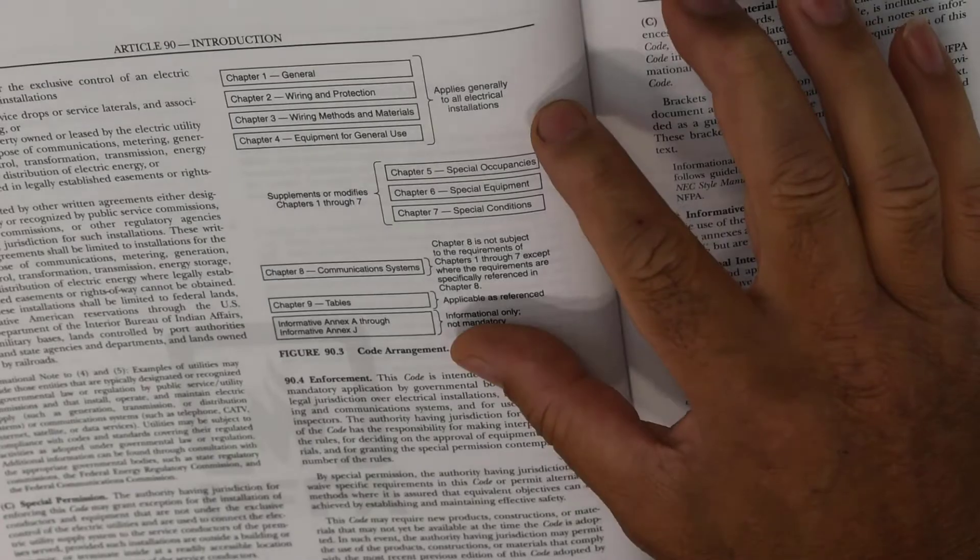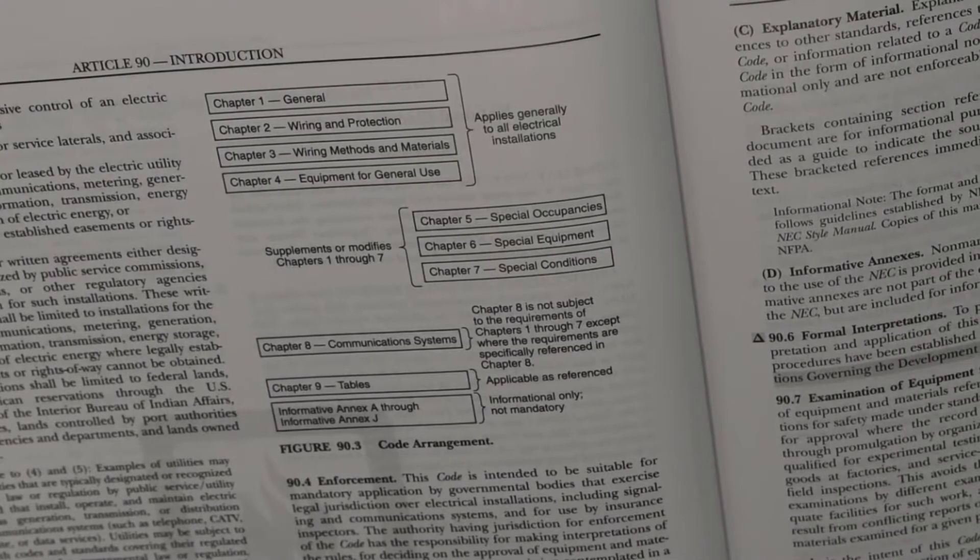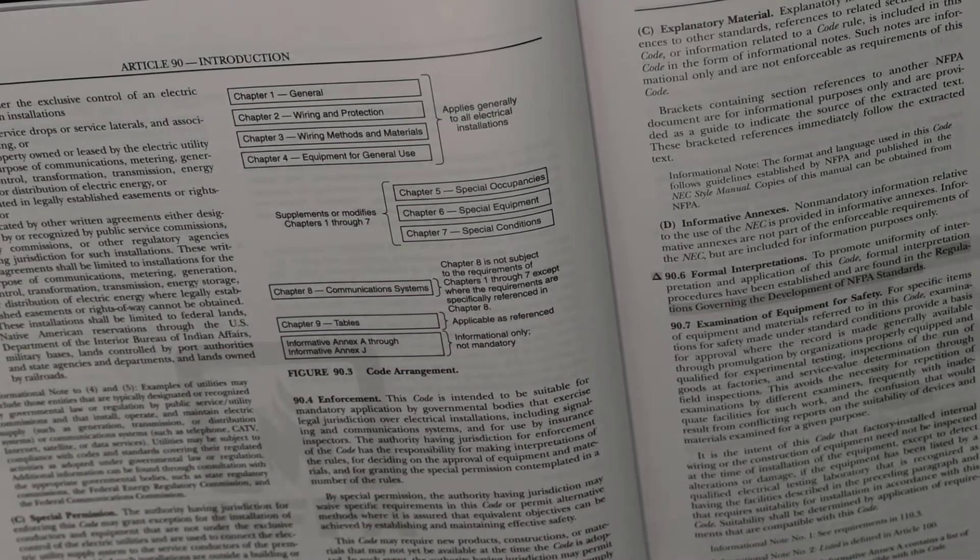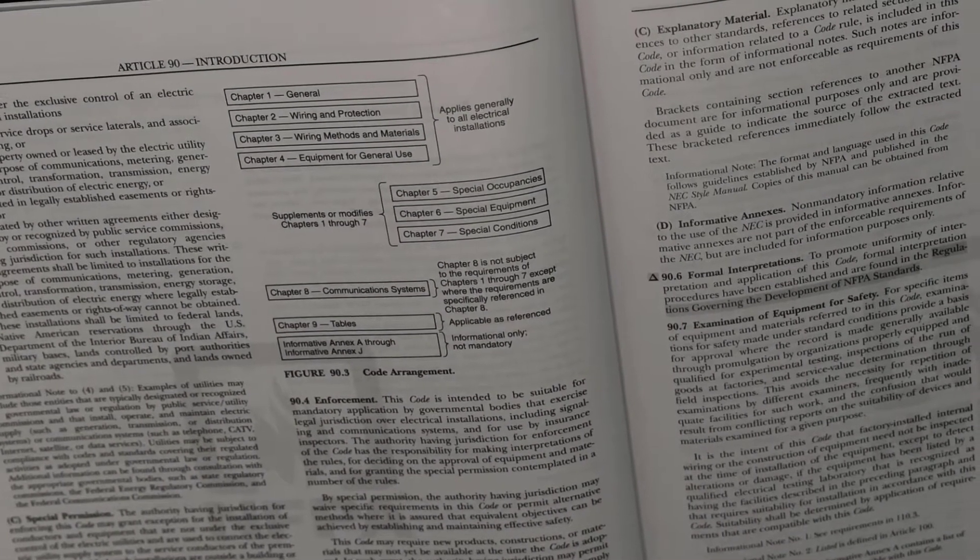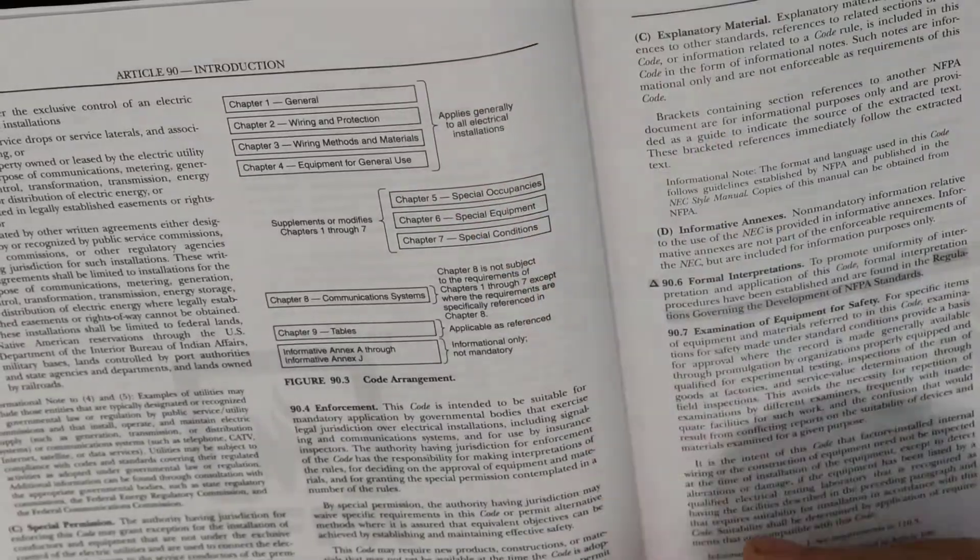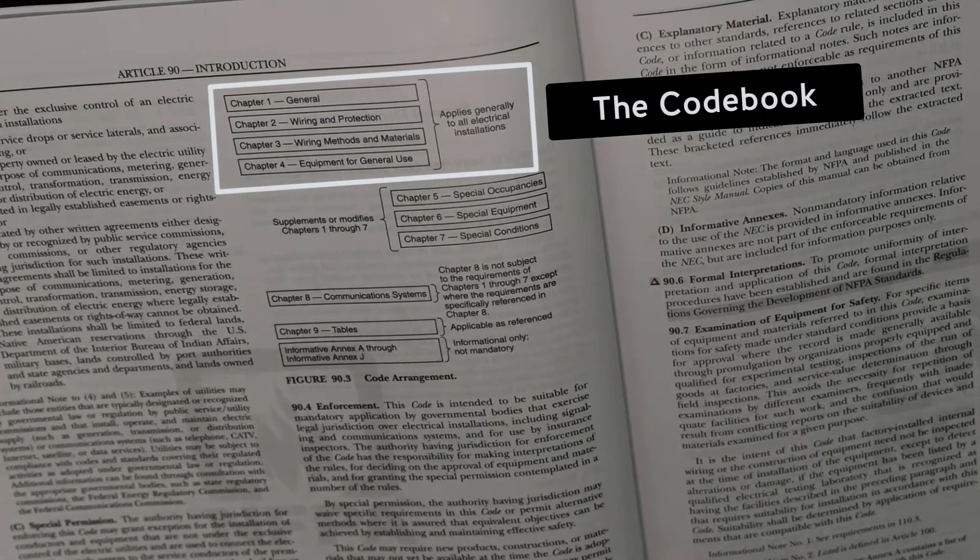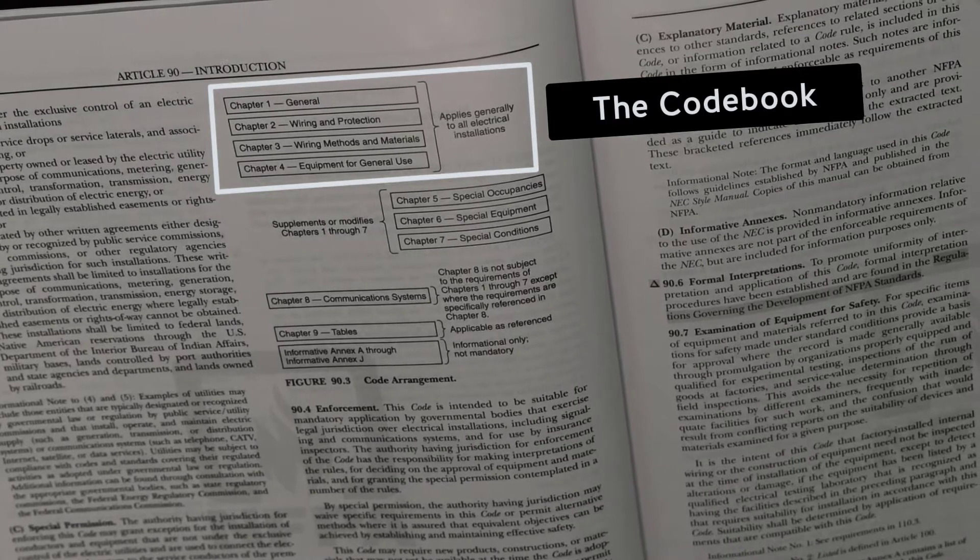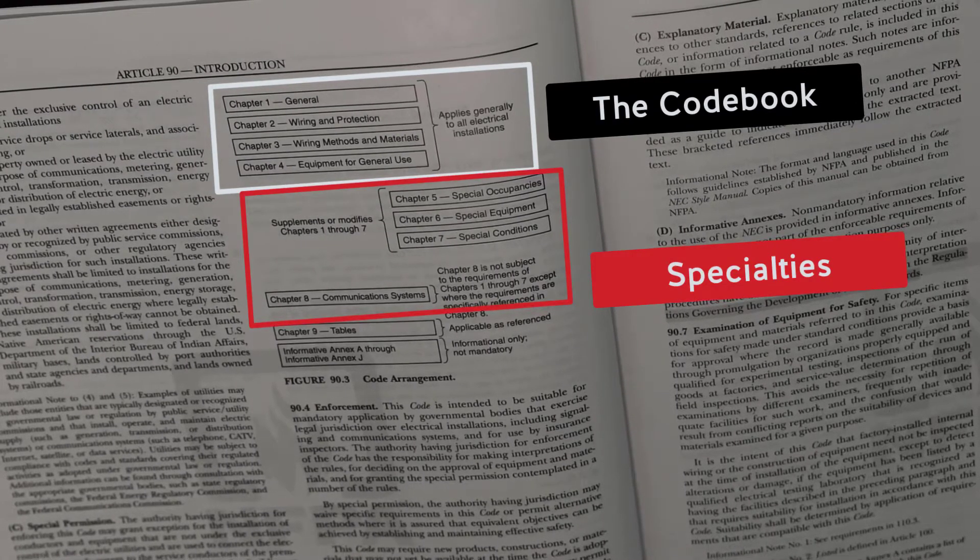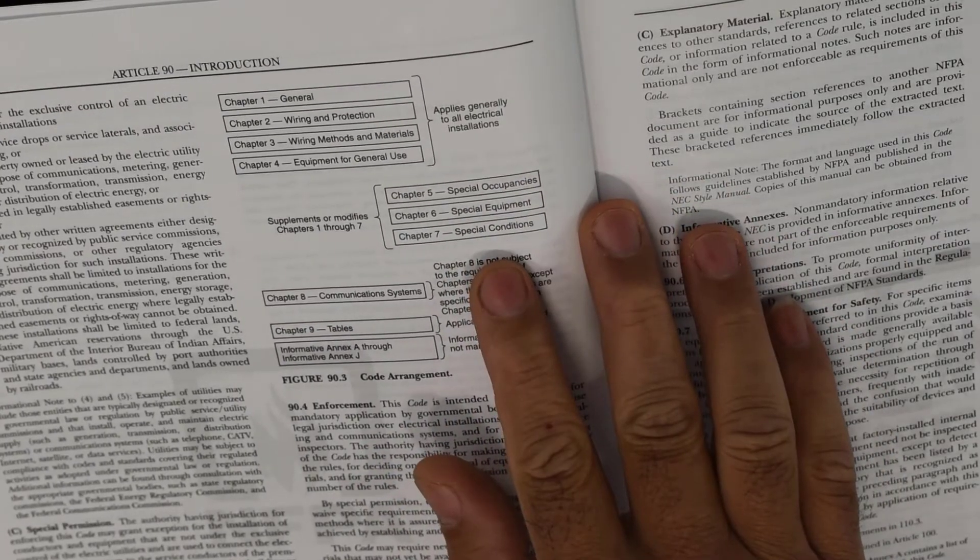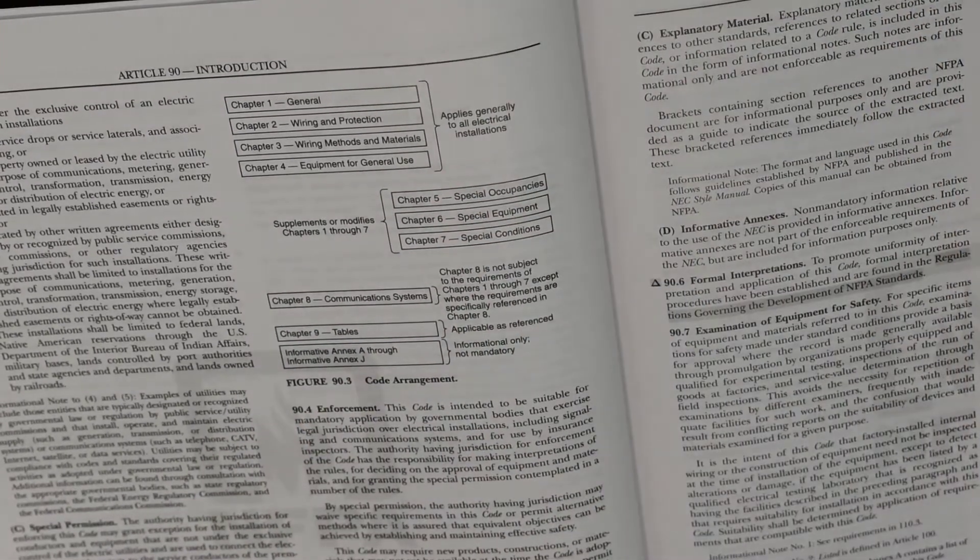We got this bracket here and it says chapter five, six, and seven. They're all grouped together and it says supplements or modifies chapters one through seven. As we discussed in the beginning, we talked about all the first four chapters applied generally. That means that is really the code book. The latter part of the code is some specialties. These are the different specialties that supplement or modify the first four chapters.